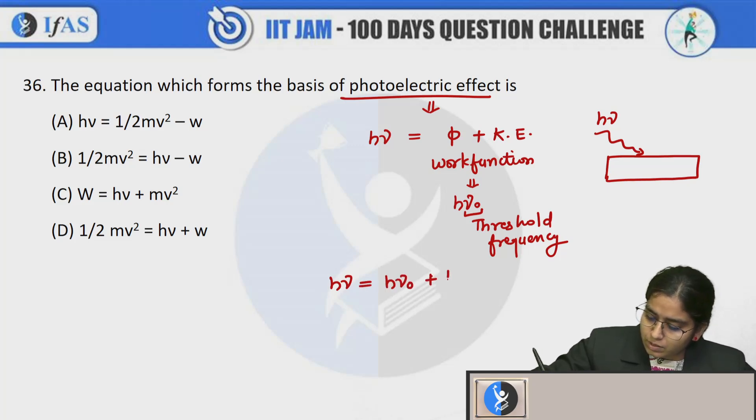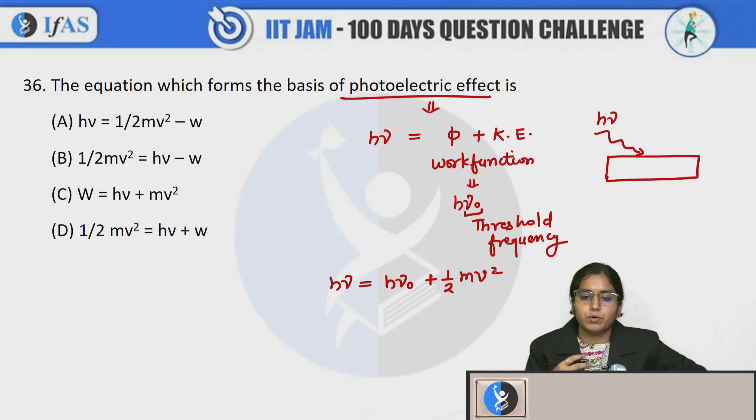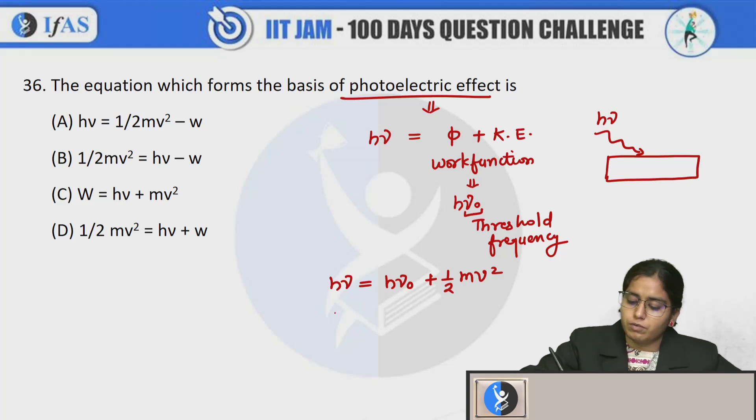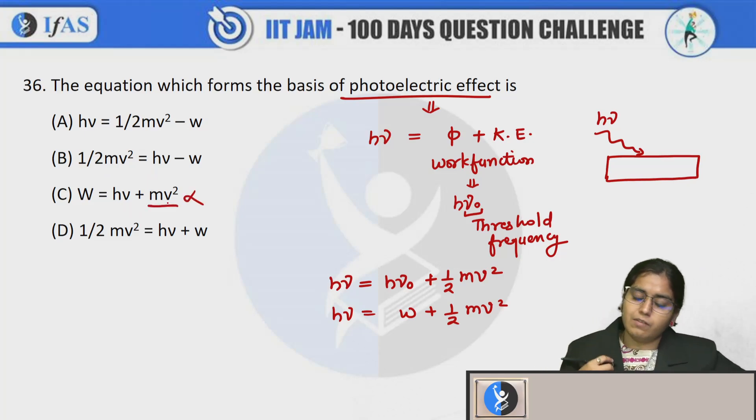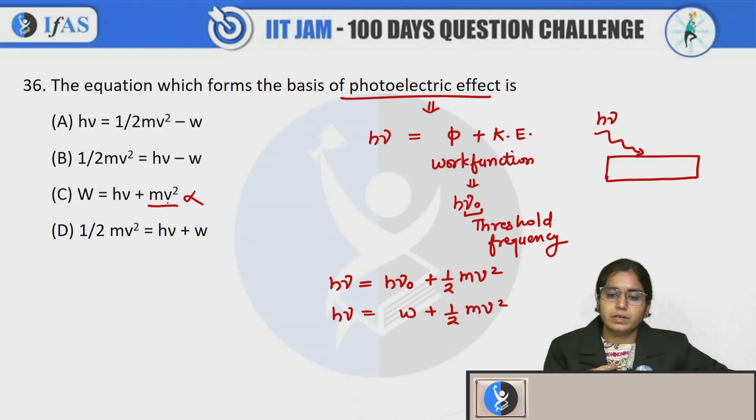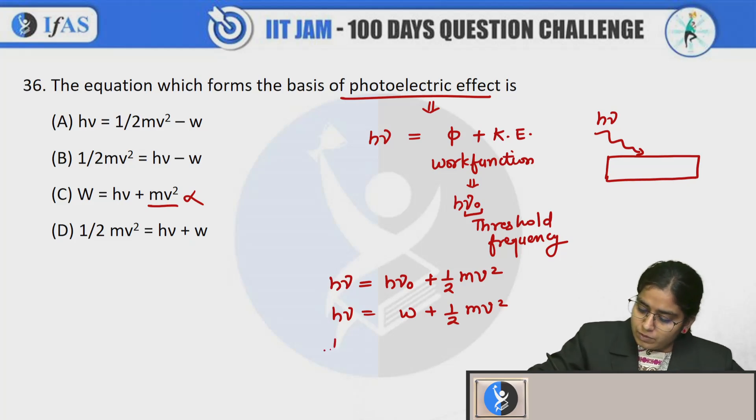Plus your kinetic energy is half mv square. Now they have provided w as the work function, so I will write this as w plus half mv square. So we can check - half mv square, this energy - this is wrong because half mv square is not provided.